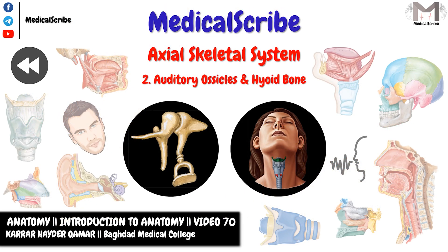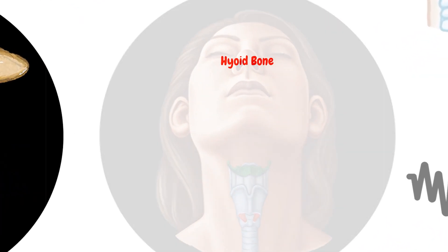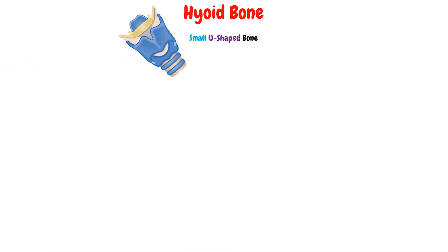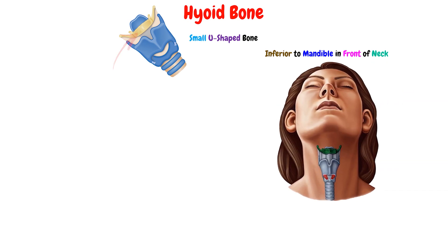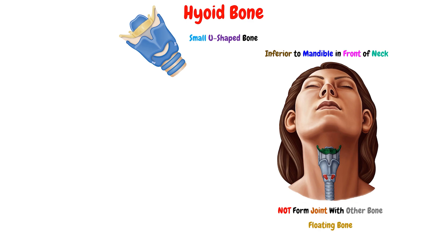The hyoid bone is a small U-shaped bone found just inferior to the mandible in the front of the neck. This bone is the only bone in the body that does not form a joint with any other bone, which is why it is called a floating bone.